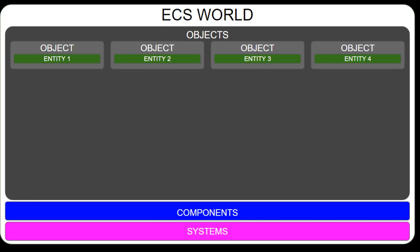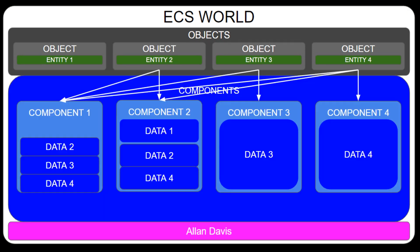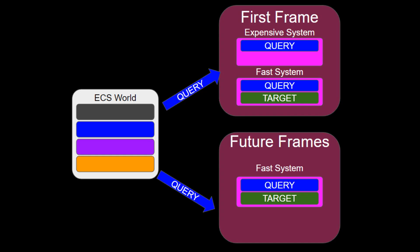Entities are the fundamental building blocks of the ECS. They represent individual objects in the world, and are composed of zero or more components. Components, on the other hand, are the individual data structures that define the specific properties of an entity, such as its position, health, or velocity. Systems are the logic that operate on top of entities and components. They perform tasks such as physics calculations, rendering graphics, or updating AI behaviour.